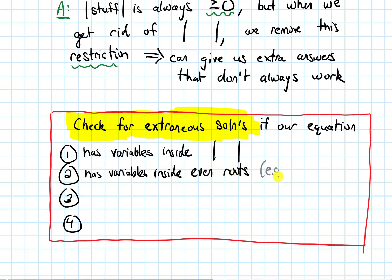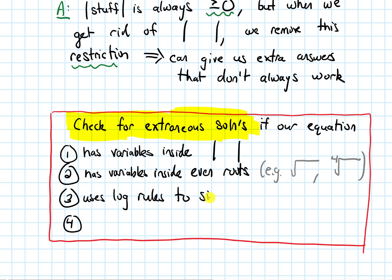Even roots include square roots, fourth roots, and sixth roots. The third situation is when our equation uses log rules to simplify it. The fourth situation is when our equation has variables in the denominator. In all of these situations, we should check for extraneous solutions after we get our answers.